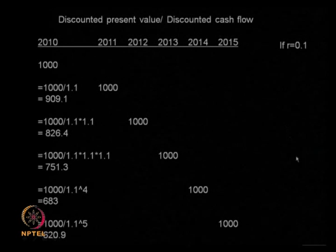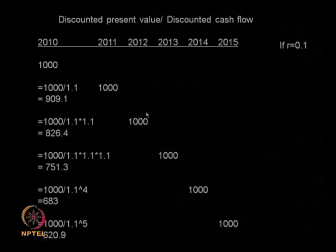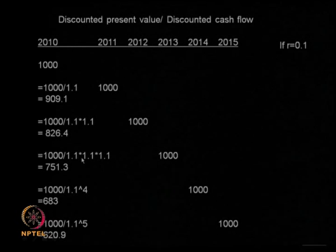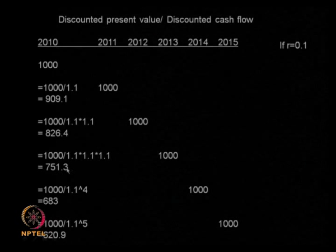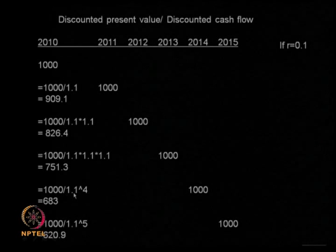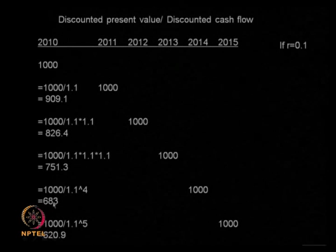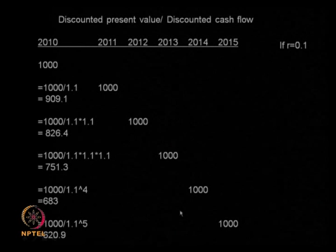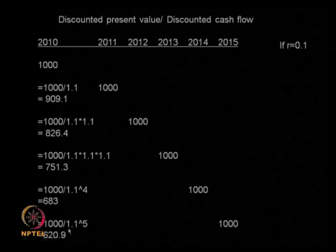You can extend the same formula for the second year, third year, fourth year, fifth year. If in 2012 I am going to get 1,000 rupees, that is equivalent to 1,000 divided by 1.1 squared, which is 826.4. A 1,000 rupees in 2013 will be equal to 1,000 divided by (1.1 × 1.1 × 1.1), which equals 751.3. A 1,000 rupees in 2014 will equal 1,000 divided by 1.1 to the power 4, that is 683. A 1,000 rupees in 2015 is only 622 rupees today. So if somebody promises you 1,000 rupees in 2015, that is equivalent to having 620.9 rupees today.